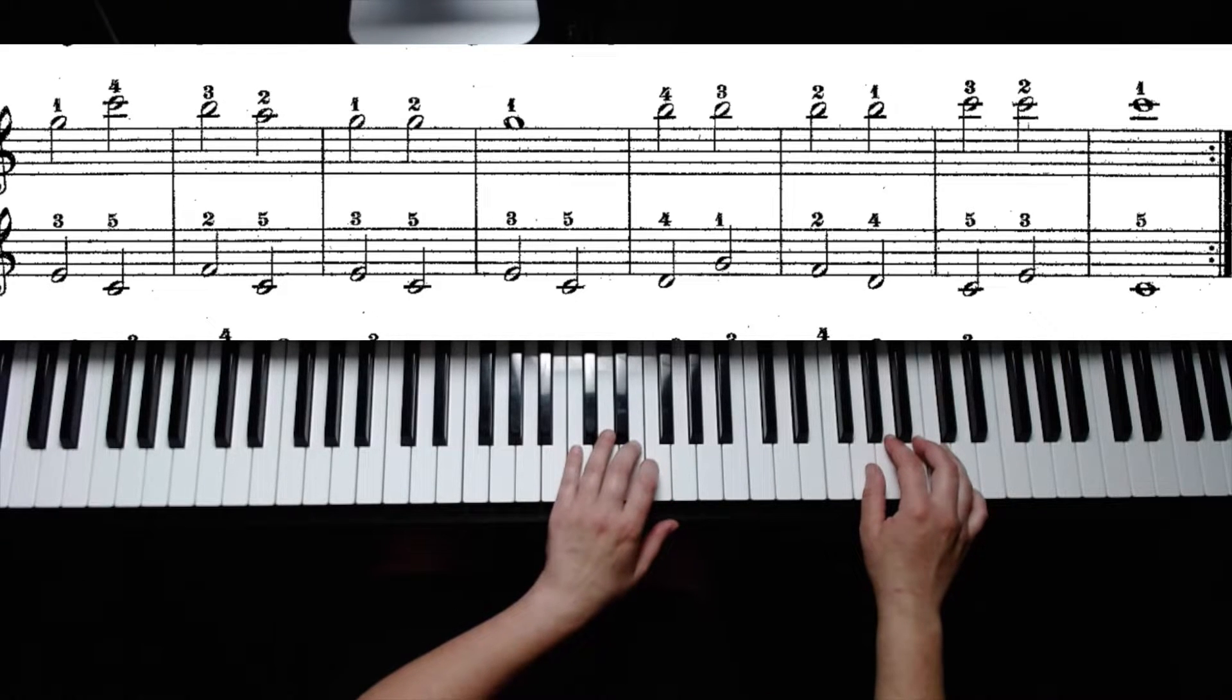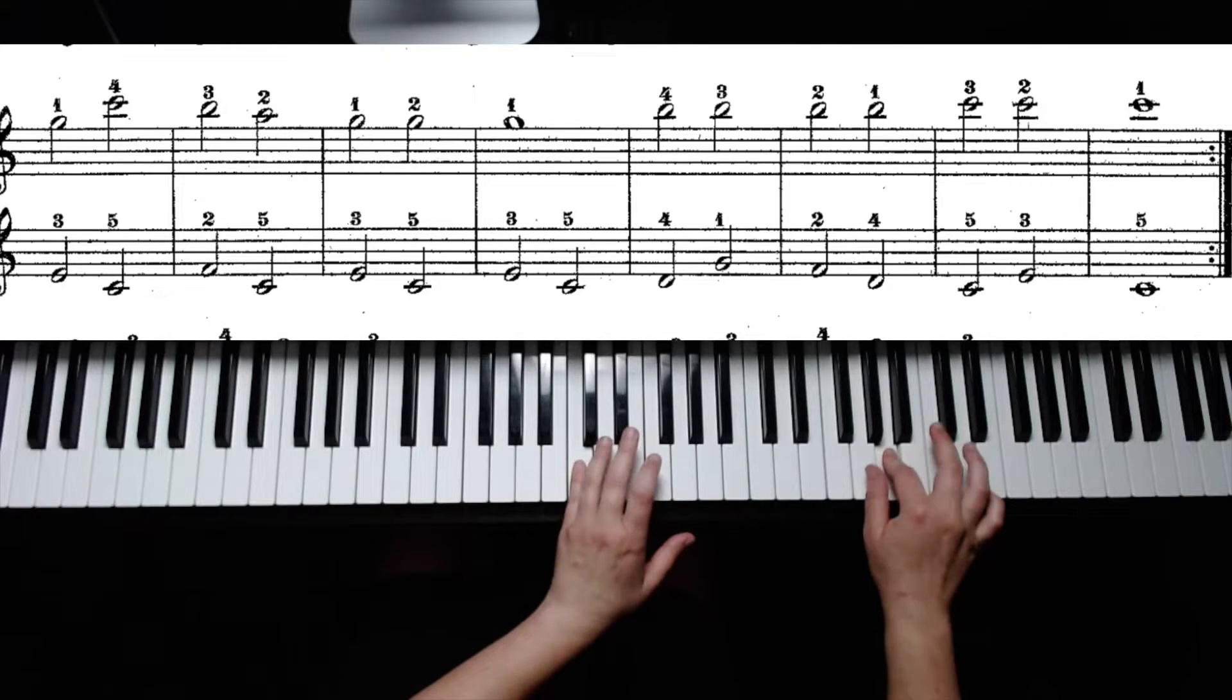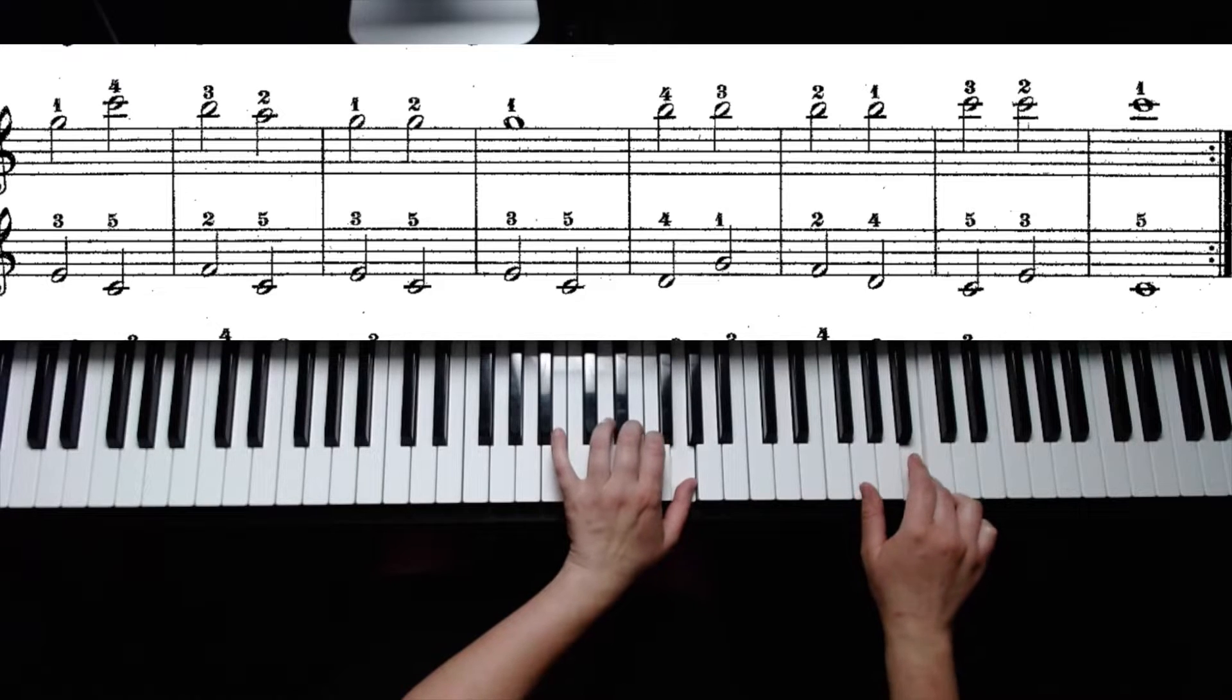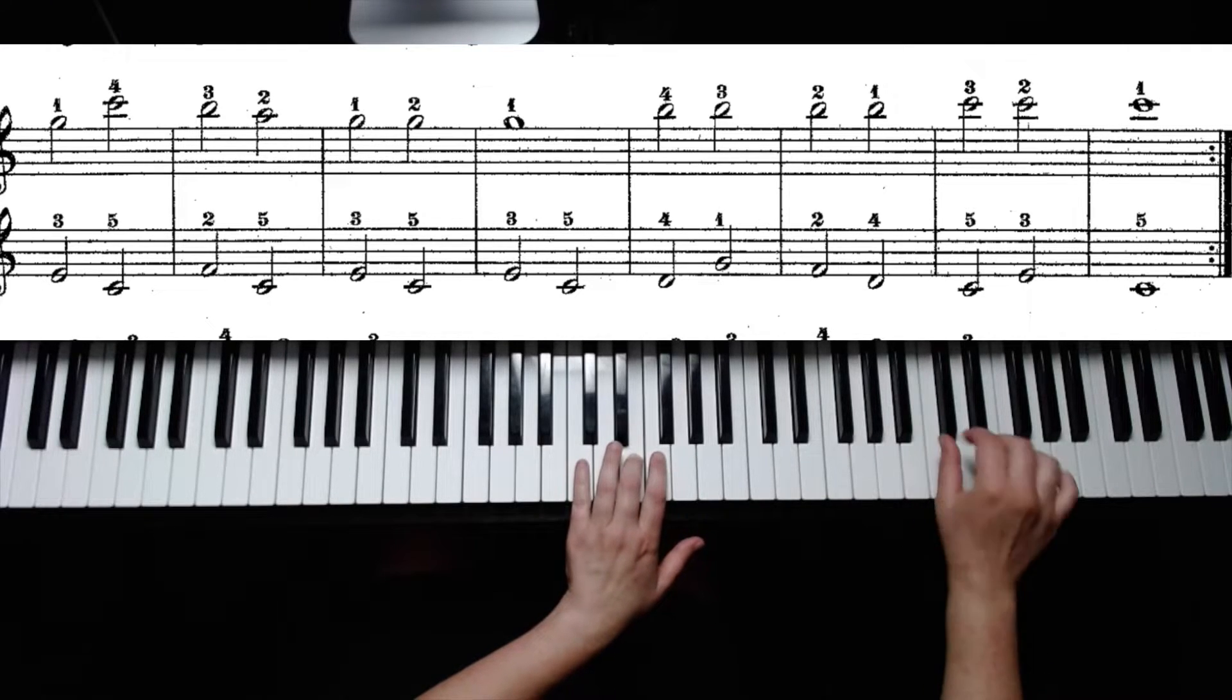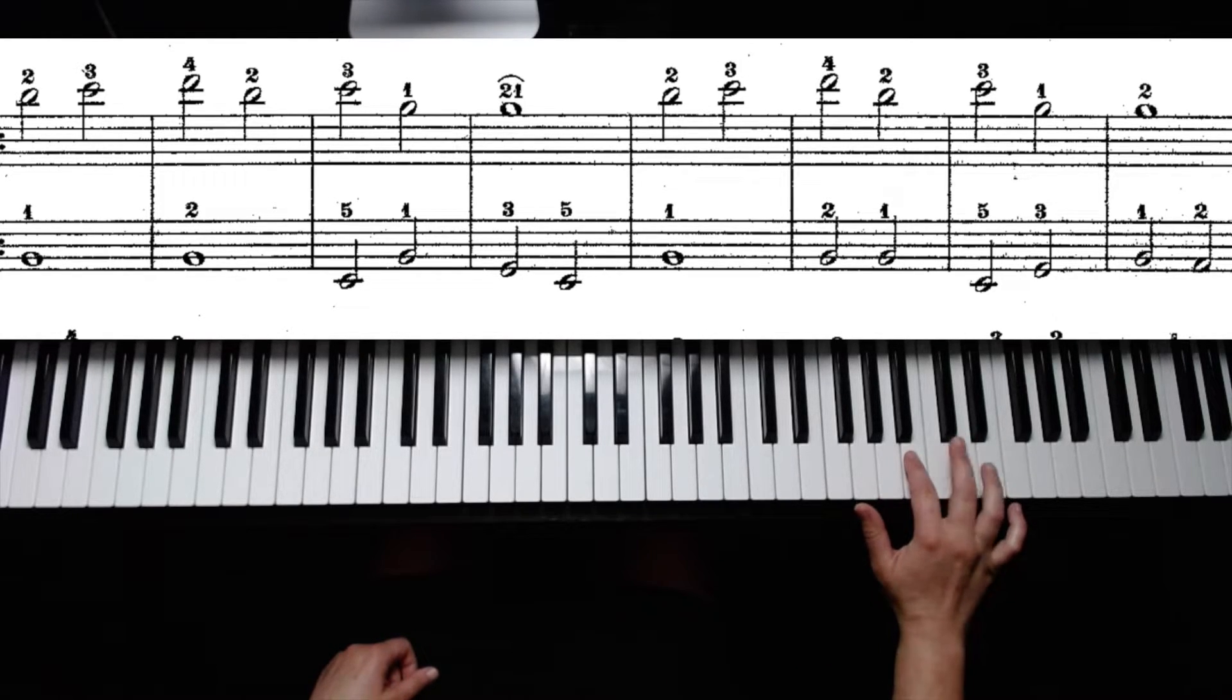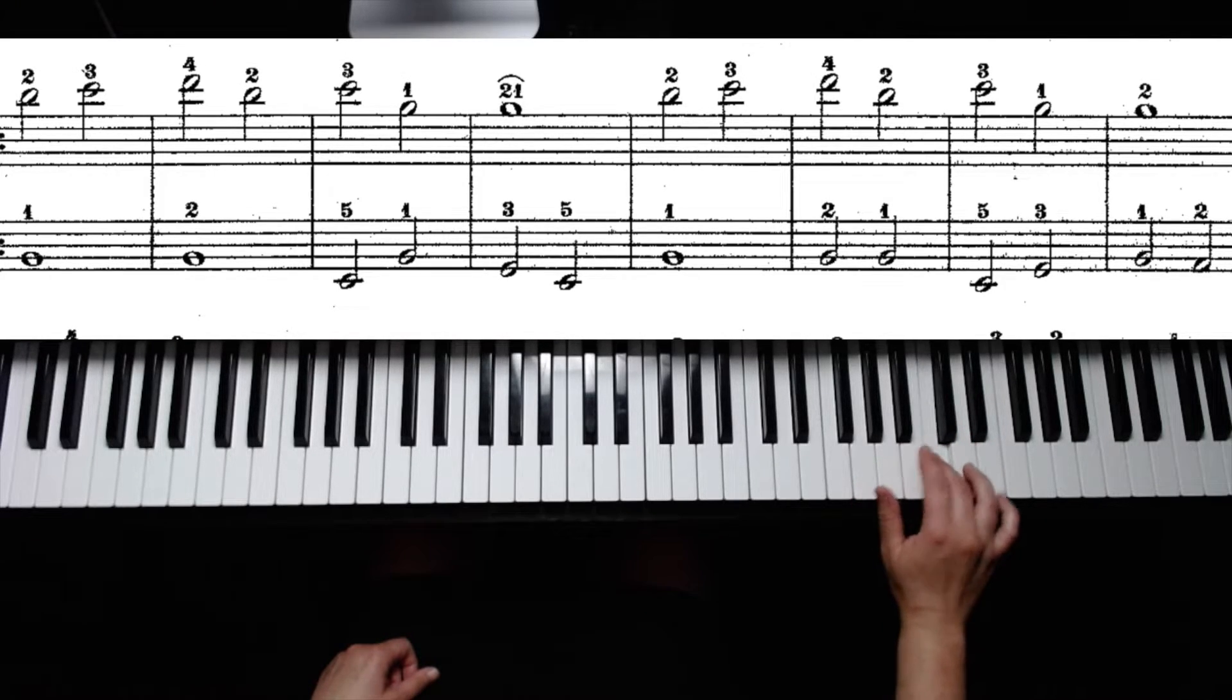And here's the second line, hands together. Now the second half starts with your second finger up on the letter B so that your third finger is on the letter C up here. We have B, C, D, B, three is C, down to G, which is one.